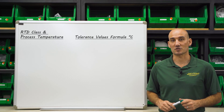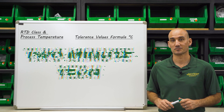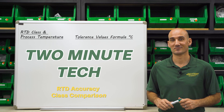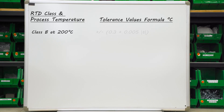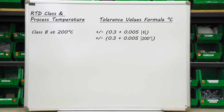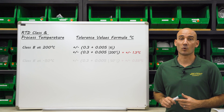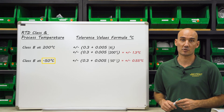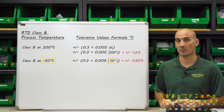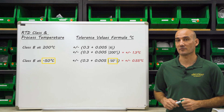For example, let's look at the accuracy of a class B RTD at 200 degrees Celsius. In the formula, T equals our absolute temperature in degrees Celsius. So we take 200 times 0.005 plus 0.3, which equals plus or minus 1.3 degrees Celsius. If you want to know the accuracy of a negative temperature, keep in mind that the formula uses absolute temperature, so you would enter it as a positive number.